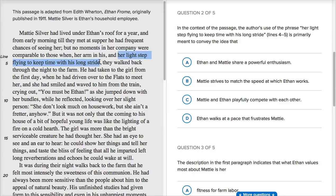So remember, this is - Maddie and Silver had lived under Ethan's roof for a year, and from early morning till they met at supper, he had frequent chances of seeing her, but no moments in her company were comparable to those when her arm in his and her light step flying to keep time with his long stride. So he's talking about a really good time when they walked back through the night to the farm. So you kind of imagine he's this guy with these long strides, and he's not used to being connected to people and being happy around people, but then there's her and her light step flying to keep time with his.